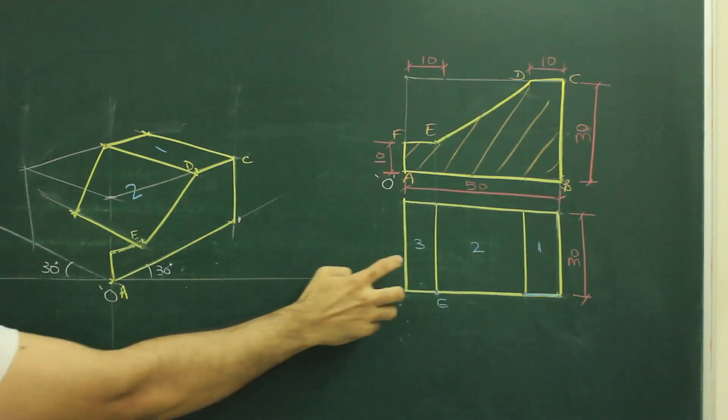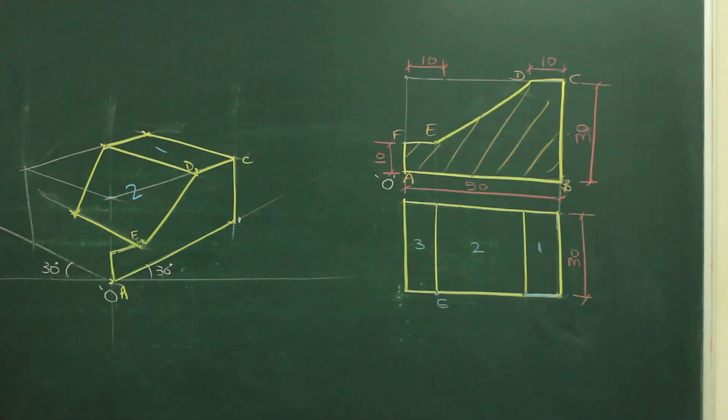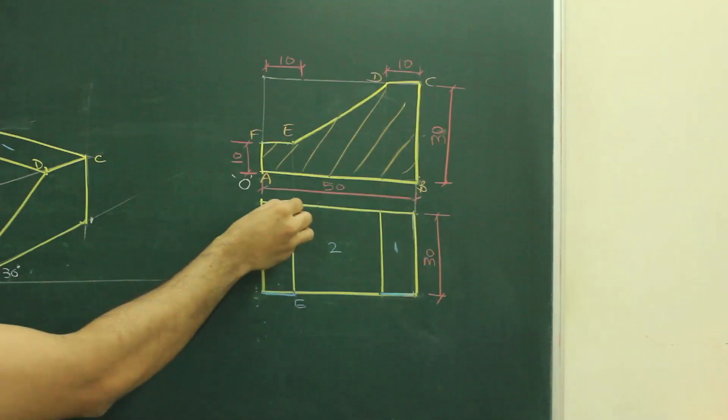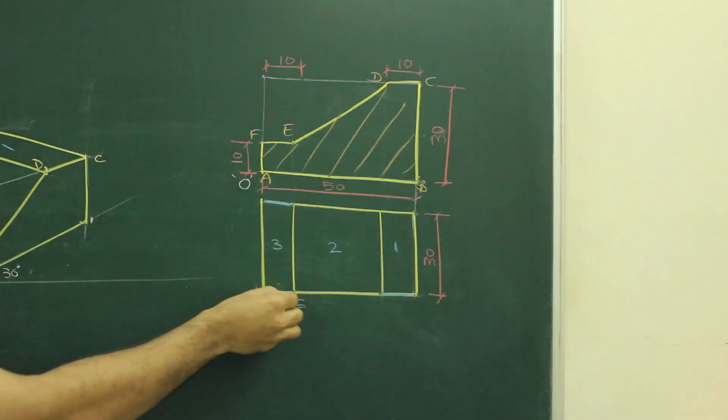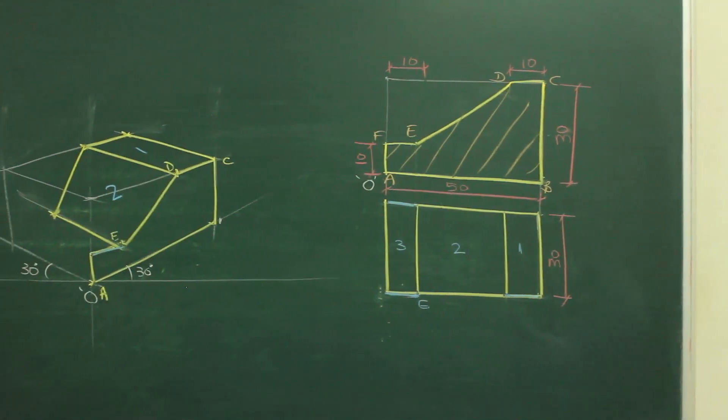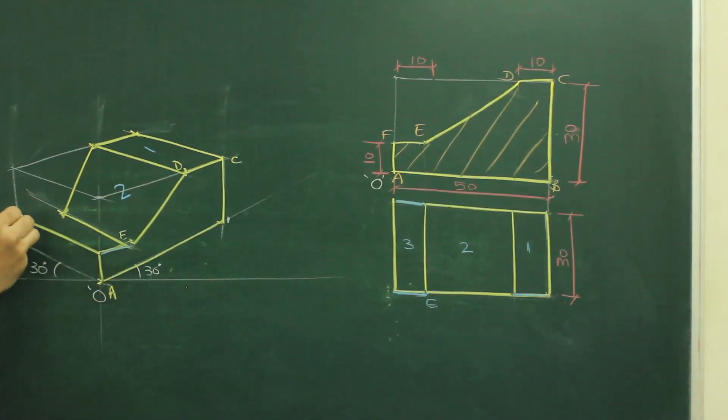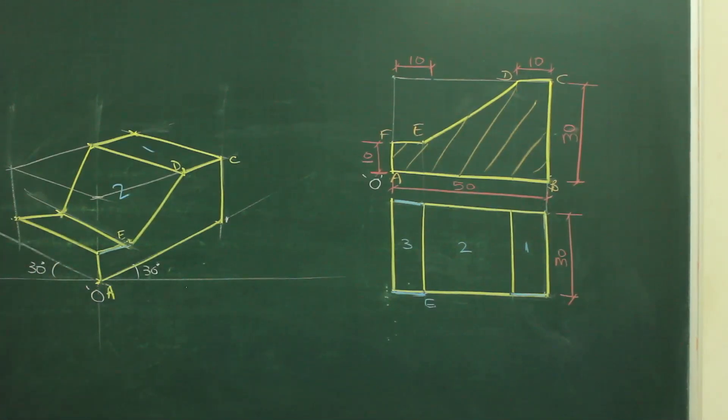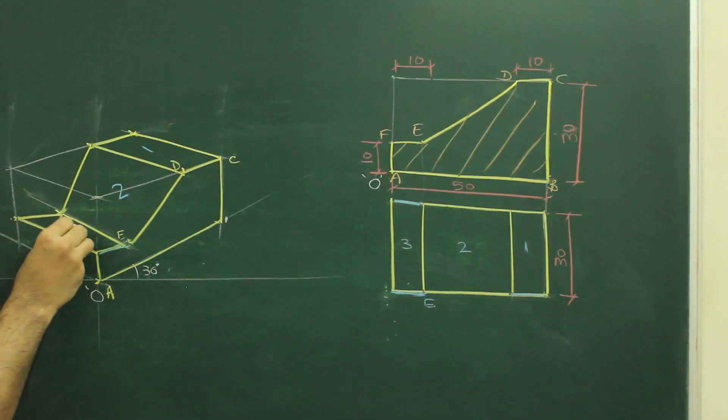Now to draw part three, if you see in top view, this part is behind also. We have already drawn this part in front view. See this, this part. So now how much I have to go behind? I have to go behind by 30. So I will go behind by 30 and then I will join those. So that means I got third part as well, and I will dark levels.